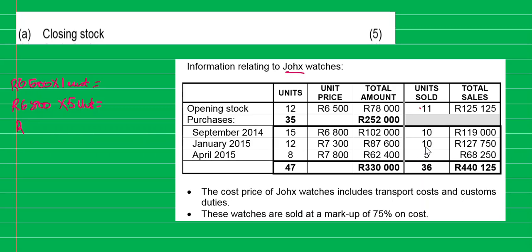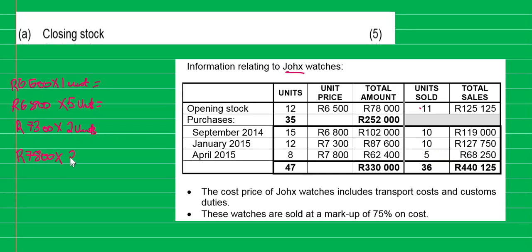We only sold two units, so we have ten units — how many are left? The cost per unit is 7,300, so 7,300 multiplied by two units. Then we go to April: 7,800 per unit, we bought eight and sold five, so 7,800 per unit times three units remaining.